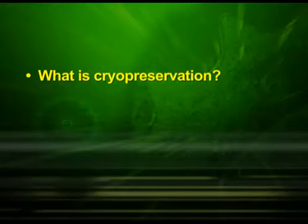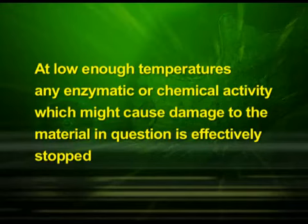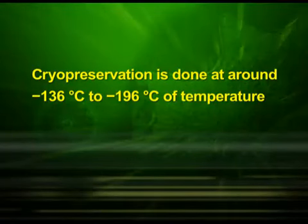The next point was: what is cryopreservation and why do we use this procedure? Cryopreservation is a process where cells, whole tissues, or any other substances susceptible to damage caused by chemical reactivity or time are preserved by cooling to sub-zero temperatures. At low enough temperatures, any enzymatic or chemical activity which might cause damage to the material is effectively stopped. Cryopreservation is done at around minus 136 to minus 196 degrees centigrade, and the preserved substances are used afterwards whenever required.